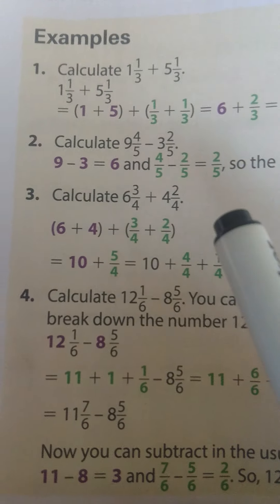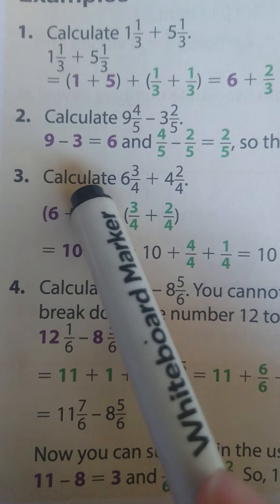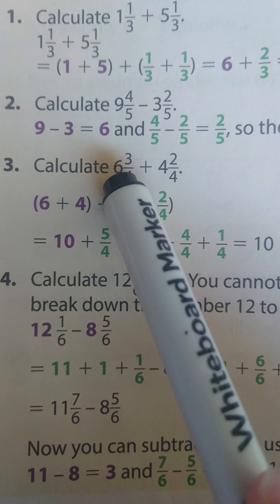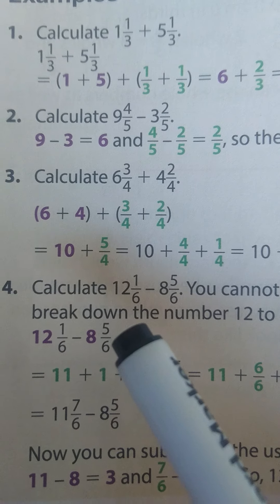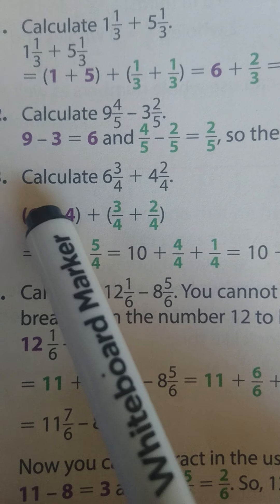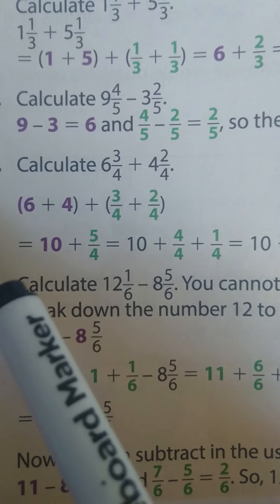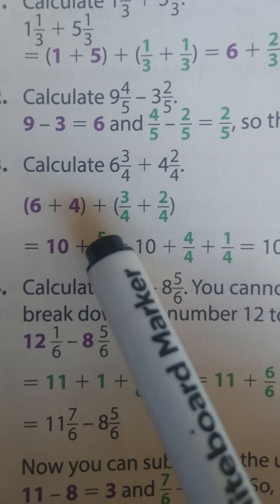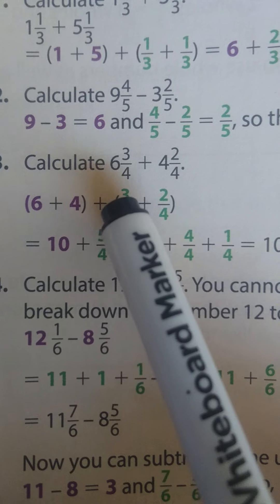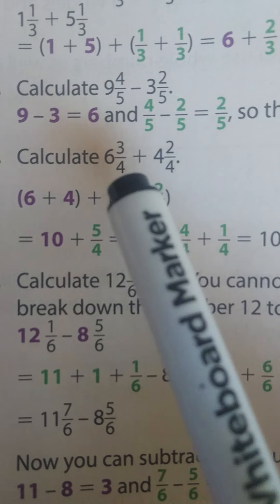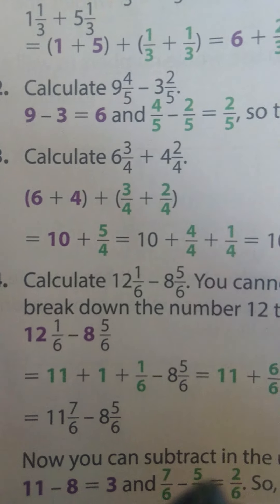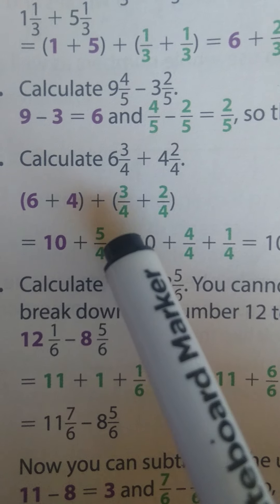Let's move on to the next example. It says calculate 6¾ + 4²⁄₄. Alright, first step is to calculate the whole numbers. 6 + 4 which is going to give us 10 plus the fraction ¾ + ²⁄₄ which is going to give us ⁵⁄₄.